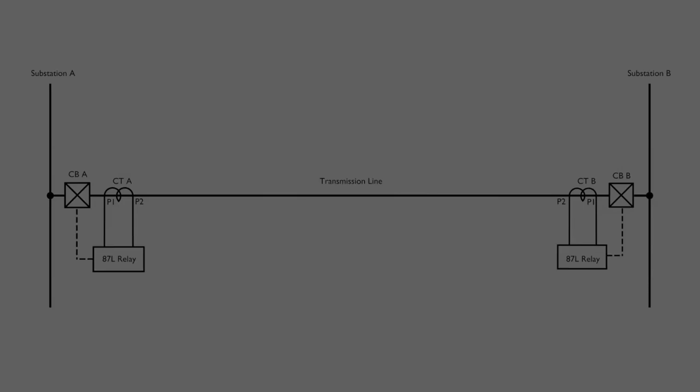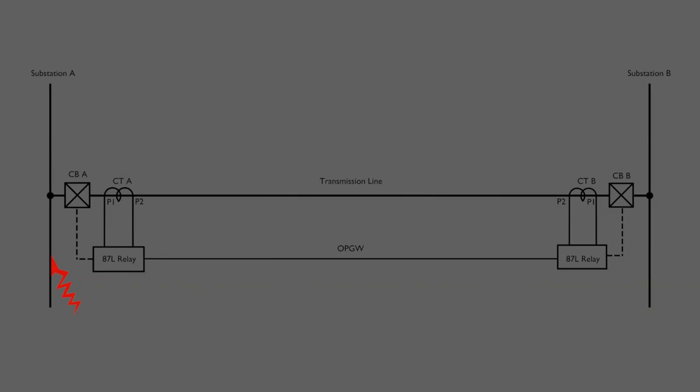Now we shall draw line differential relays with the current transformers. The relay activates the tripping of associated circuit breakers. Line differential relays are generally numbered as 87L. The differential relay at both ends of the transmission line is connected to an optical fiber. OPGW is used for this purpose.